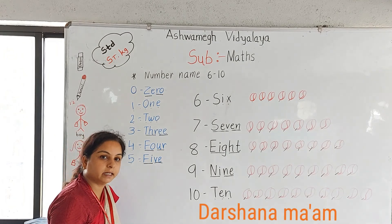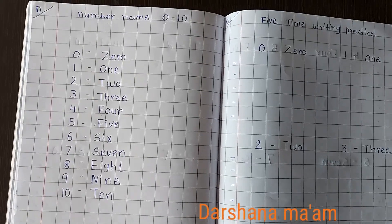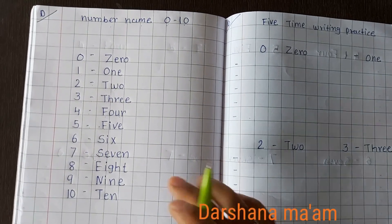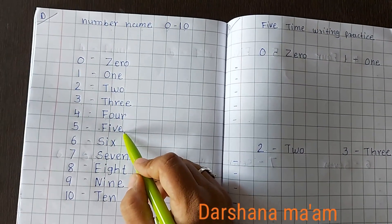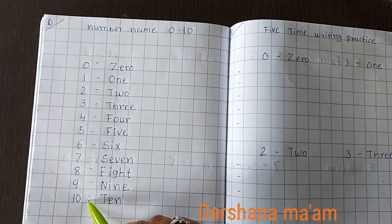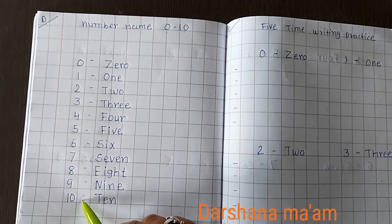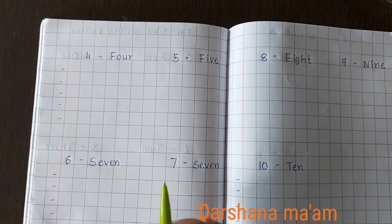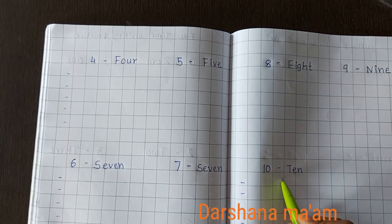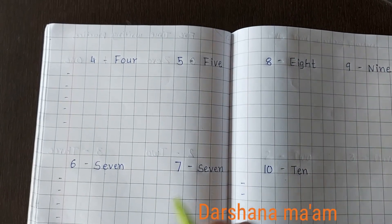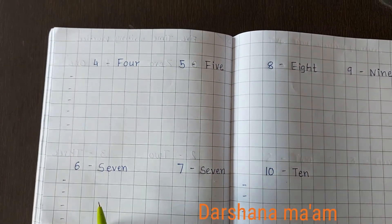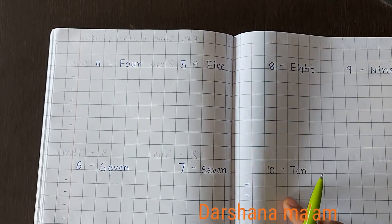Now we will see the notebook. Okay students, we will see the notebook. In the previous video we have already written 0 to 5. So today we have 6, 7, 8, 9 and 10. We will write 5 times each. In the previous video we have already written 5 times. So today we write 6, 7, 8, 9 and 10.